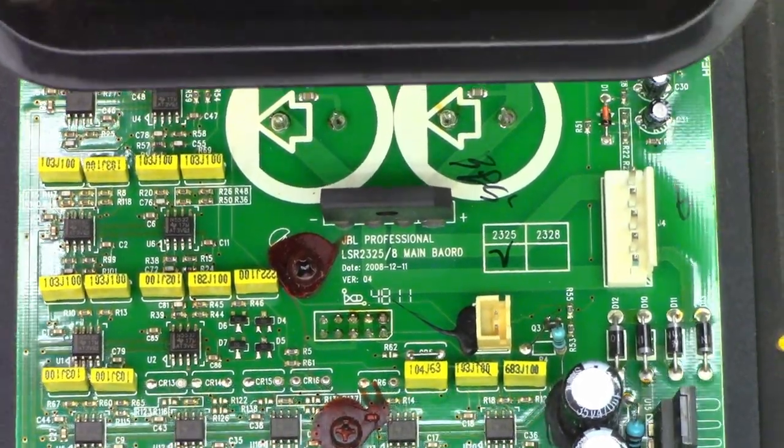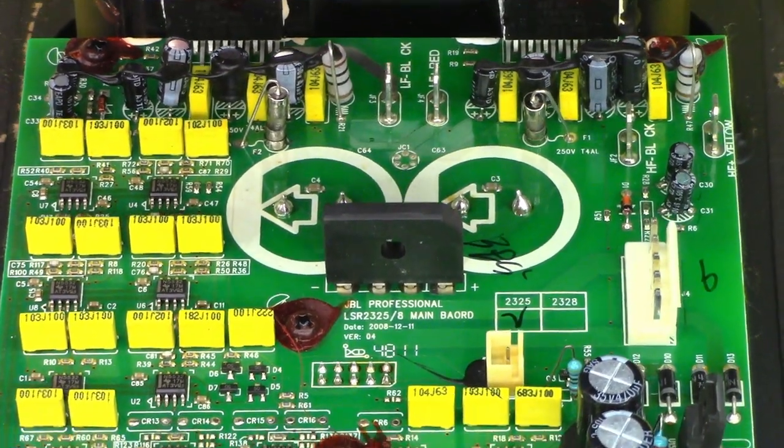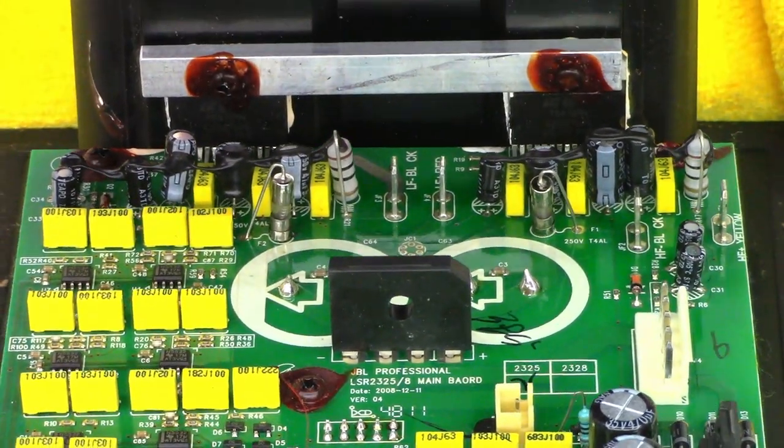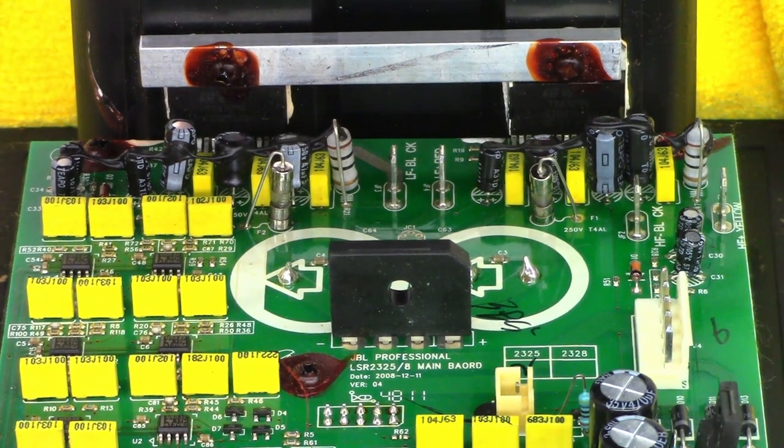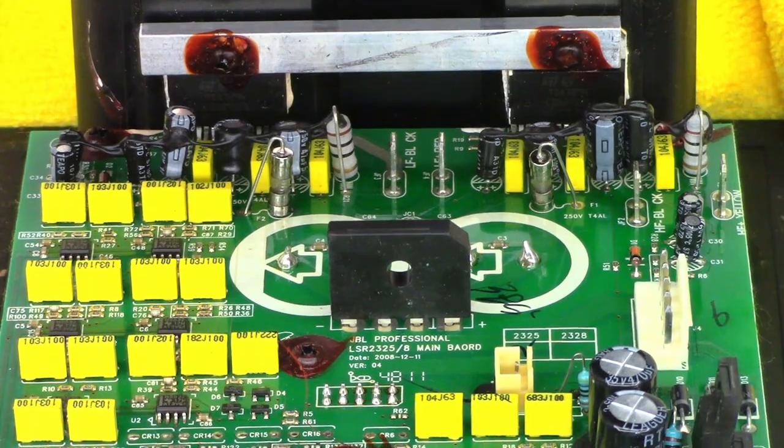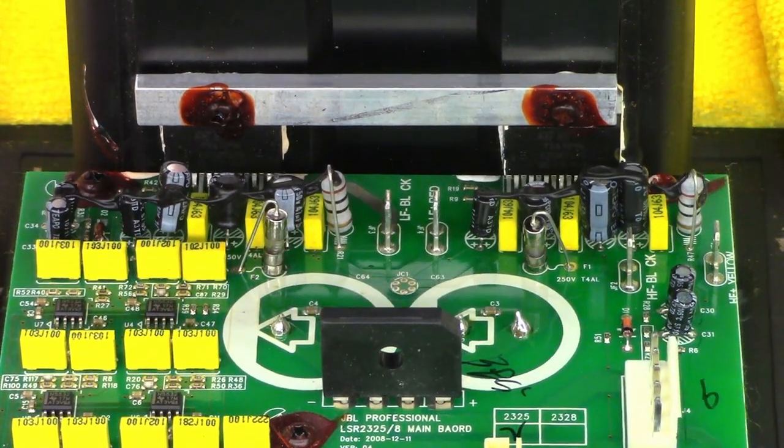And then it's going to be kind of hard to see because there's the subwoofer port right there, but up underneath here are the two power amplifier ICs. And it might be kind of hard to make it out but they are TDA7294s, two of them, one for the low frequency and one for the high frequency.